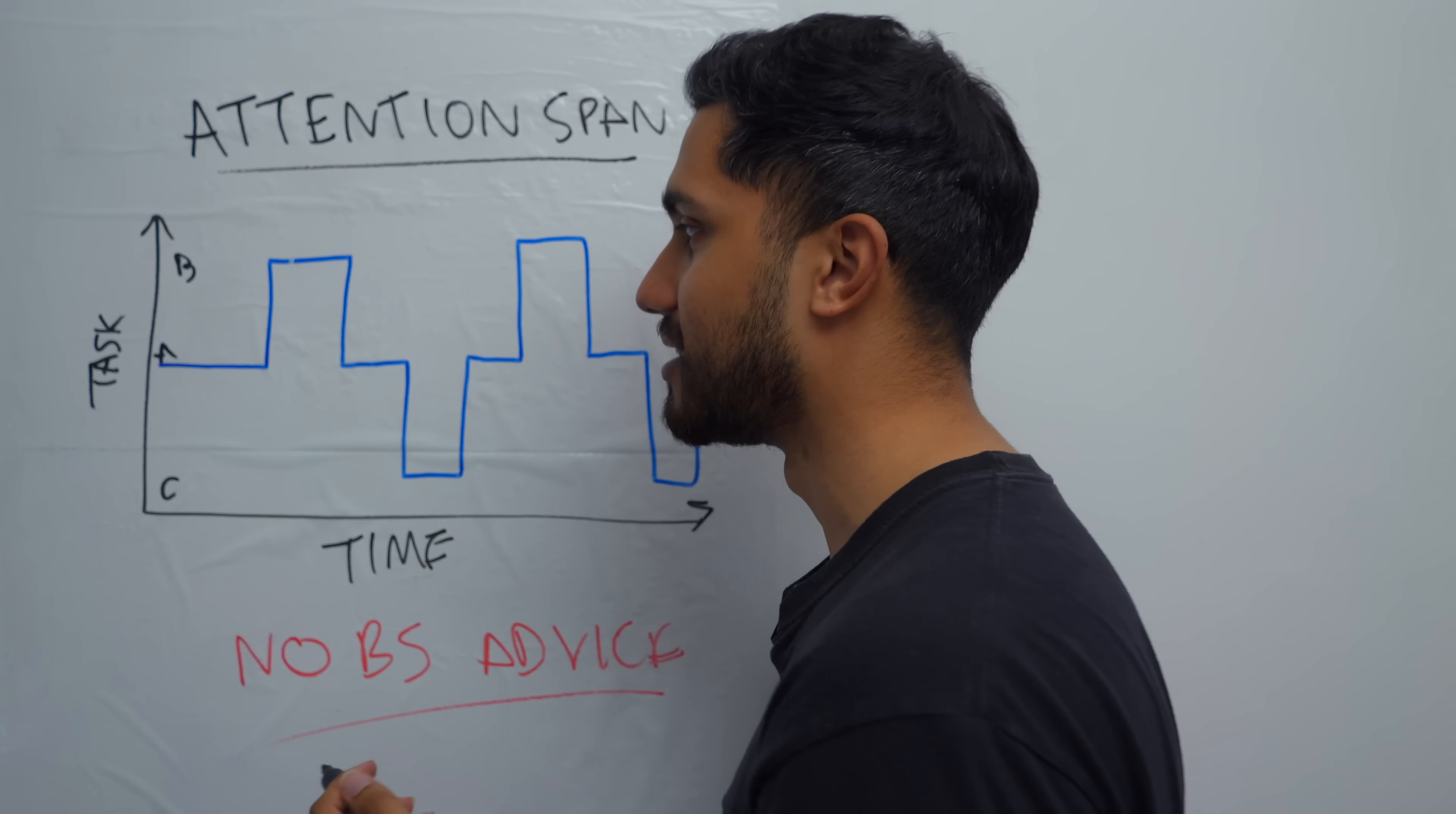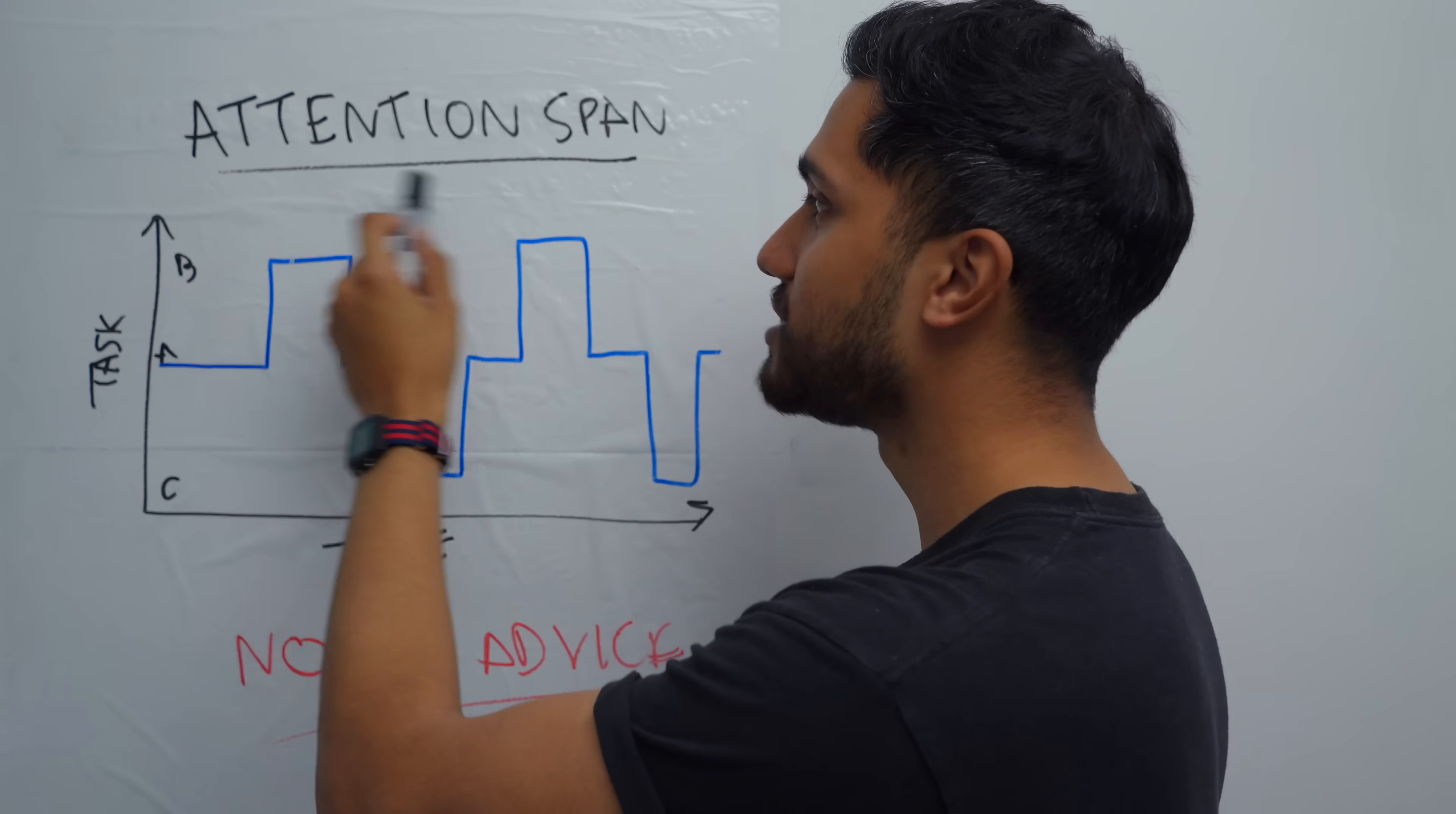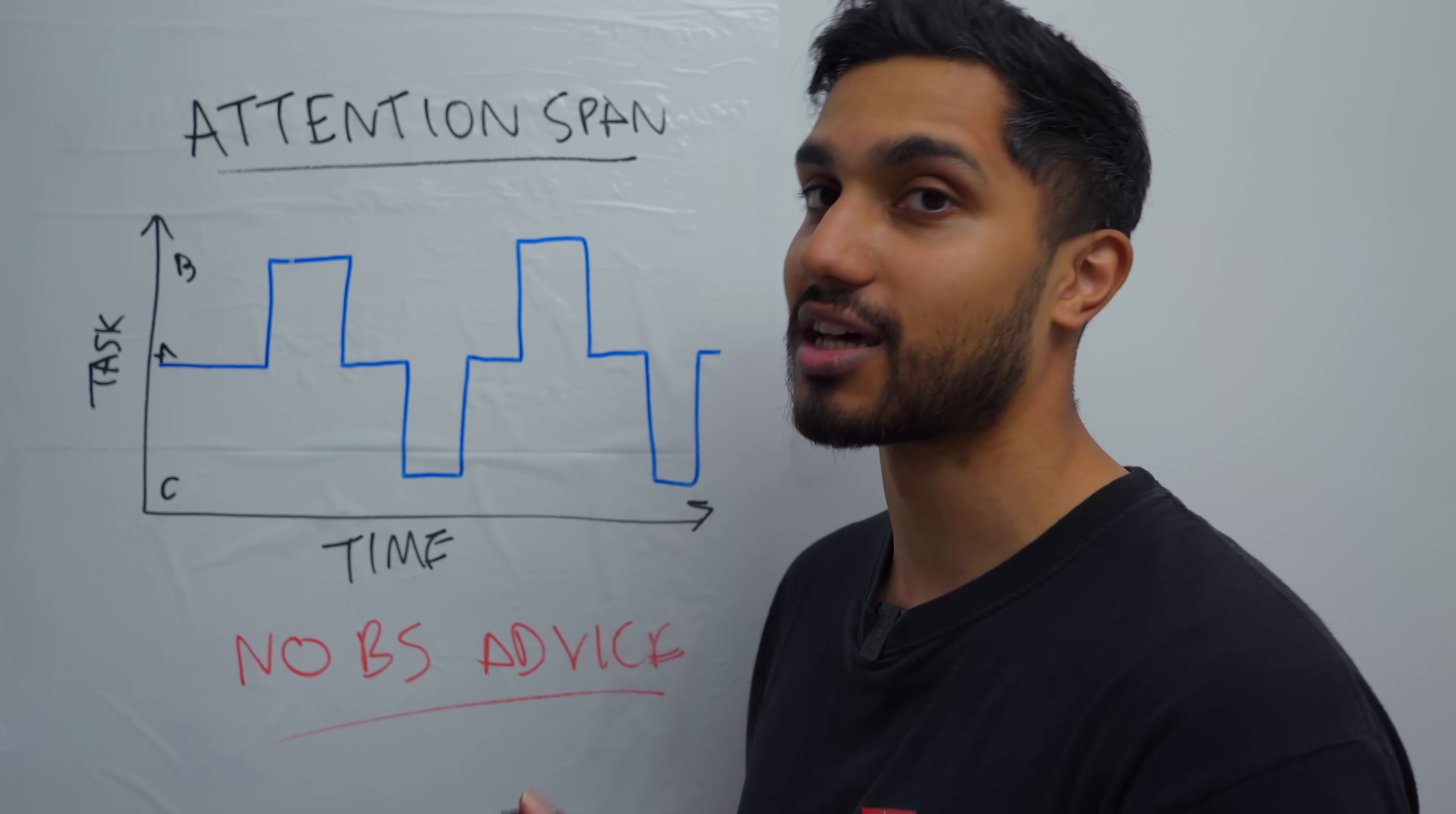So let's say you've got task A, which is what you want to do. Then there's task B like going shopping or task C like petting your cat. Your attention span is all about how quickly you switch between tasks and switching away from the task that you wanted to do.